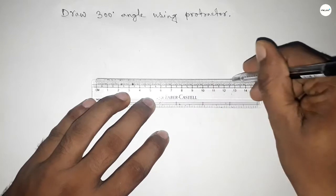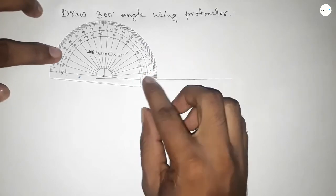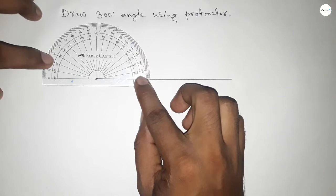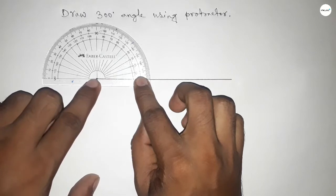a straight line of any length. First, drawing a line. Next, pointing out here to draw a 300-degree angle on this point. Now putting the protractor on the line perfectly, then counting the angle. So this is